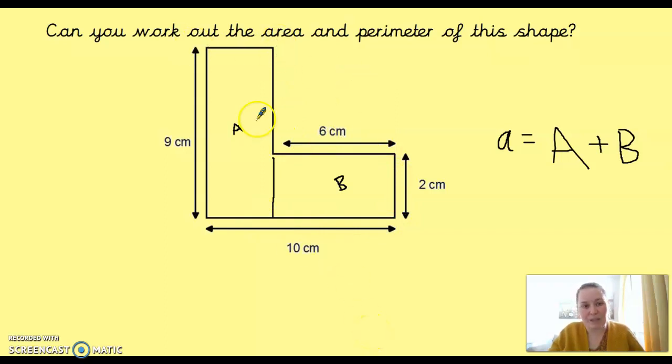And for that, you need to know what this side is and what this side is. So, we can work it out. 10 here, 6 here, so this must add to 10, so that's a 4. And with this one, this is 9 and this one's 2, so this one must be 7. So, hopefully that's enough. Go and pause and go and work it out and come back.